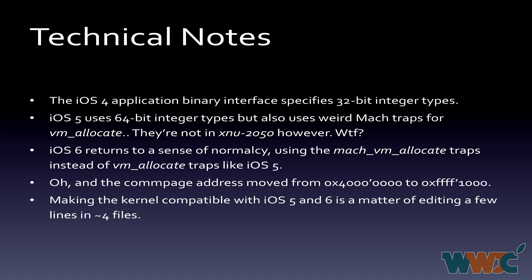There are some weird things iOS 5 does with Mach traps. For the VM allocate function, which allocates virtual memory mappings, there are actually three different versions: one uses the Mach message API, one is called VM allocate as a kernel RPC trap, and another is called Mach VM allocate, also a kernel RPC trap. In iOS 6, they got rid of the VM allocate traps from iOS 5 and switched over to Mach VM allocate.